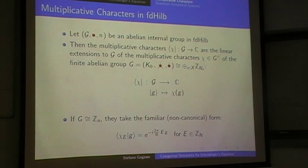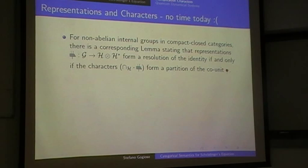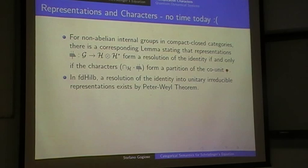In the non-abelian case there is an appropriate generalization which, instead of multiplicative characters, involves representations and the associated characters — not necessarily multiplicative. It turns out that the representations form a resolution of the identity if and only if the characters form a partition of the co-unit, so the theory can be appropriately generalized. From now on I'll just say 'character,' and for the abelian case you should take multiplicative character. In FD-Hilb, such a resolution exists by the finite-dimensional version of the Peter-Weyl theorem, so our theory covers both abelian and non-abelian symmetries.